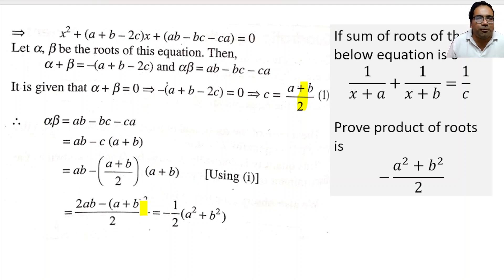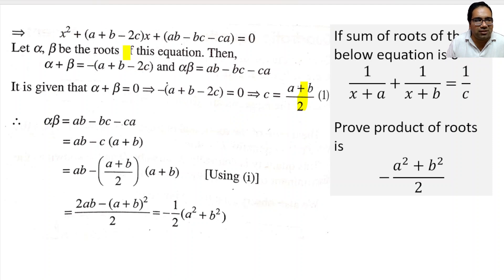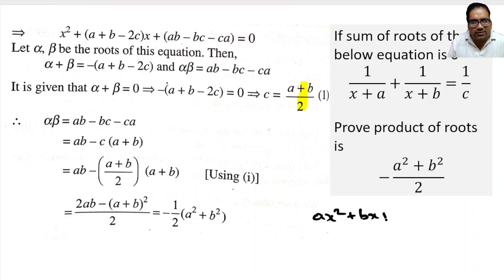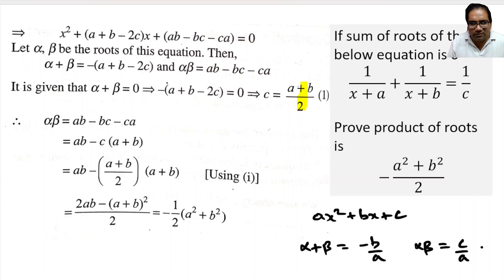Very simple problem. The only little trick here is to recognize this is a quadratic equation, convert it into quadratic form, and know that the sum of roots is −b/a and product of roots is c/a for ax² + bx + c = 0. That is all we needed. Thank you.